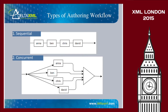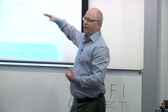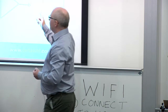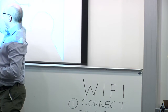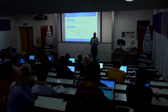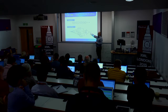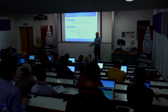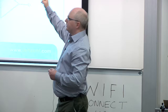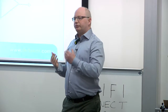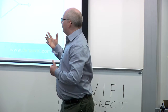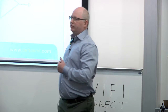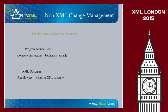Even though I've shown these as two separate types, in the real world there are a lot of grey areas in between. In concurrent working, Ben, Chris and David might actually be working in a semi-sequential way without you knowing. Likewise, in a sequential workflow, it might be that Ben and David talk to each other. Both types happen in the real world — that's my experience at least.